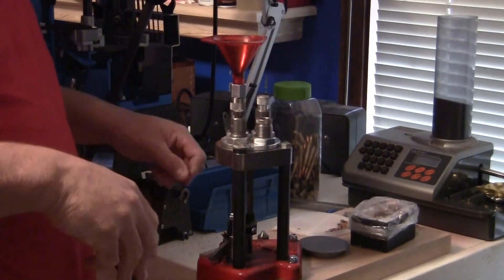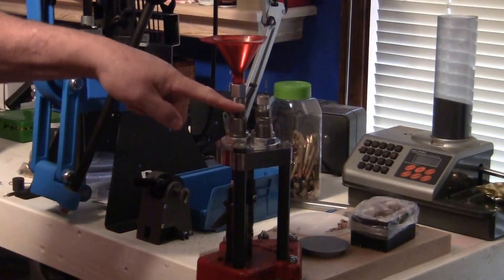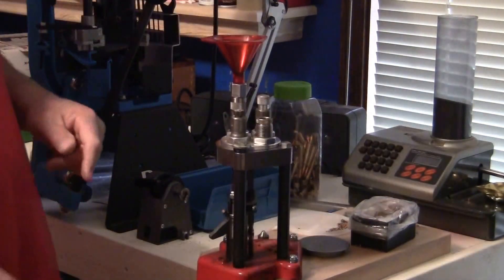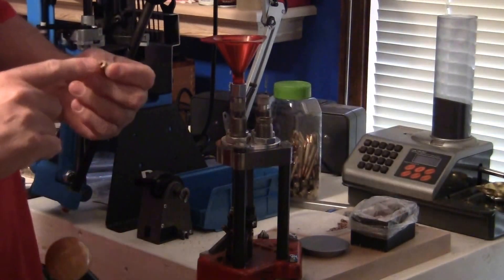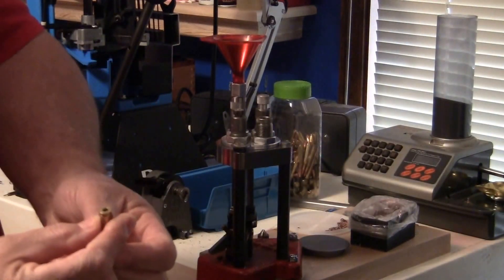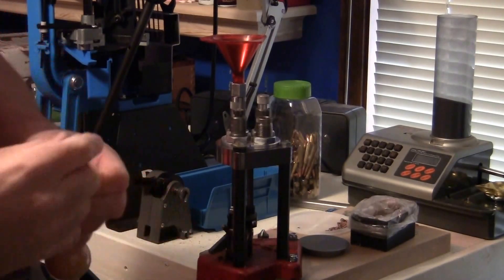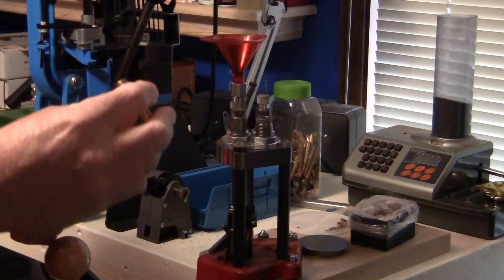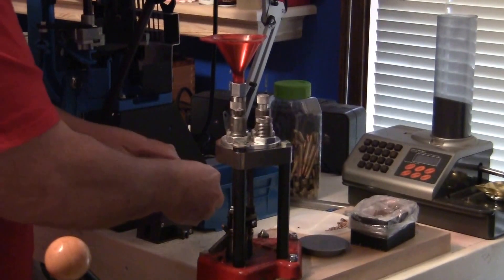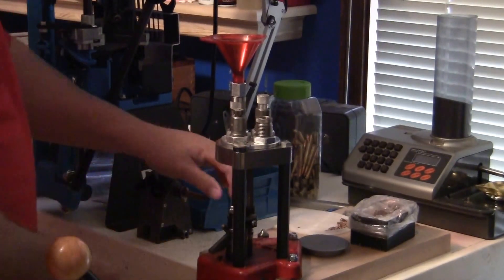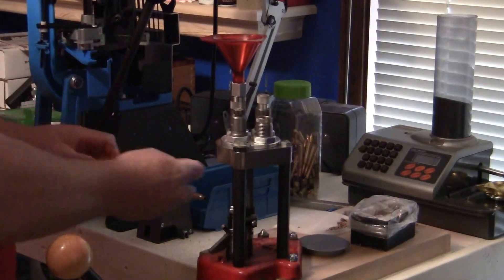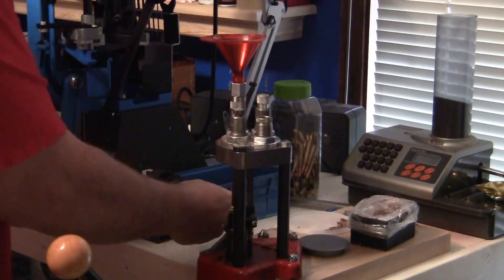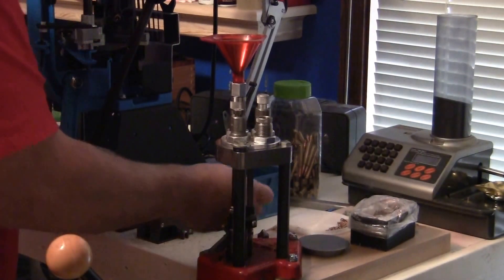So we're going to go into the sizing die. That Dillon case lubricant works great. This is going to have a crimp primer, so I'm going to deal with that. First thing I'm going to do is stick it over here in the Lee Zip Trim die.